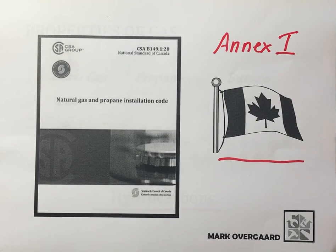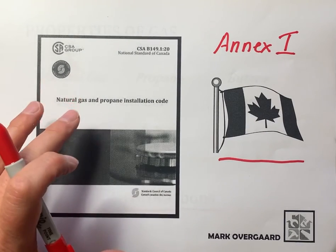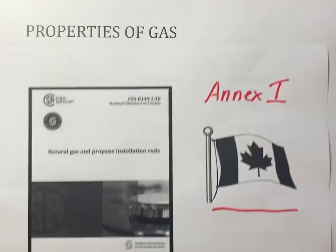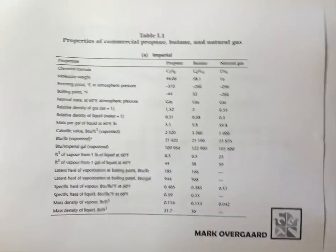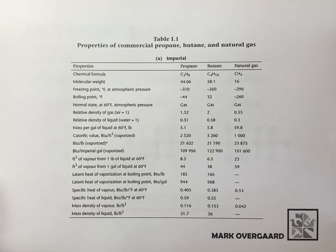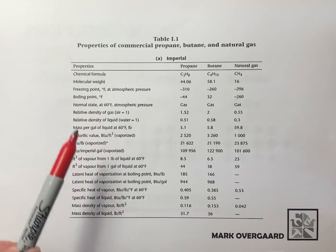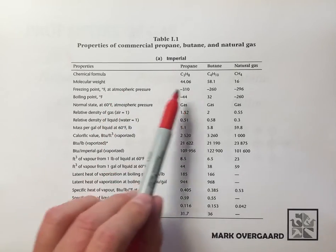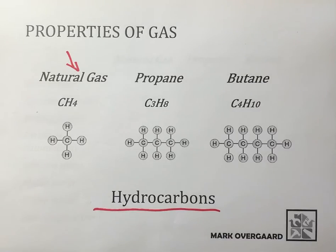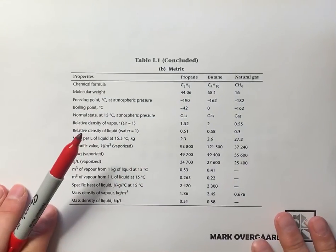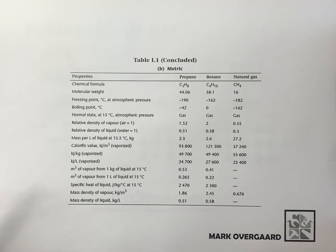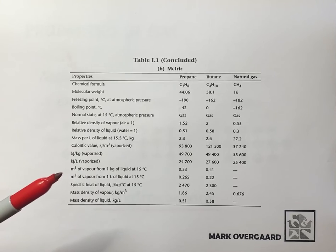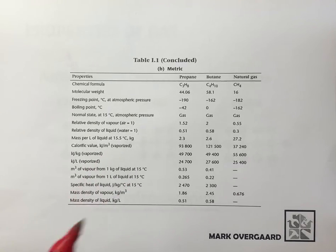Annex I is where all these numbers come from. If you take the code book, flip to the back, and find it, you'll come up with something like this — Table I1 — covering propane, butane, and natural gas. It goes through all kinds of properties, and I'm going to cover some of these. Note that this version is imperial. There's also the same table in metric. Most of the ones we'll go through today are the imperial ones, so there'll be some Fahrenheit values and that kind of thing.